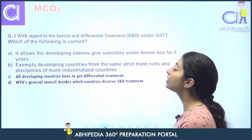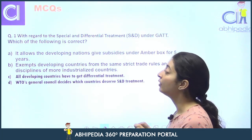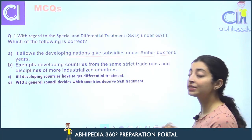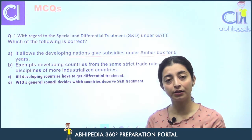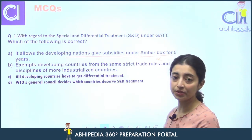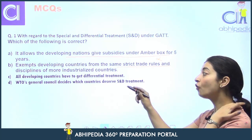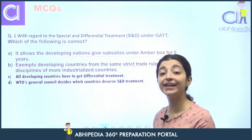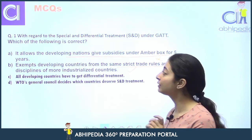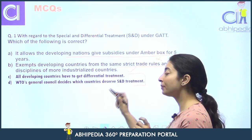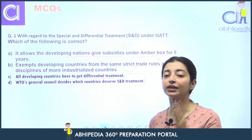Now coming to some MCQs. With regard to special differential treatment under GATT, which of the following is correct? Statement A: ye developing nations ko allow karta hai to give subsidies under amber box for 5 years — nahi, aisa kuch nahi hai, 5% or 10% ki limit thi de minimis clause ke under. Statement B: kya ye exempt karta hai developing nations ko from the same strict trade rules of more industrialized nations — yes, this is true. Statement C: all developing countries have to get differential treatment — aisa kuch nahi hai, they don't have to get it. Agar woh chaahe, apna claim nahi bhi re sakti hain.